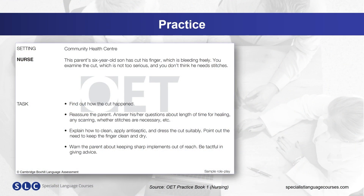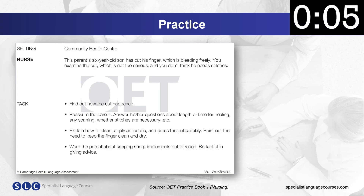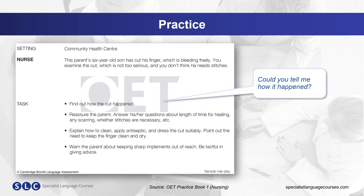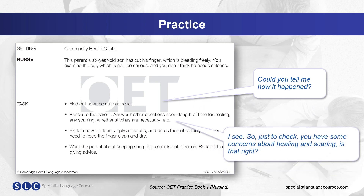Now let's take a look at a sample OET role card and put into practice some of the things we've talked about so far. Look at the first two tasks on the role card. Think about how you could use an open question at the start, and is there an opportunity to summarise information to check in the second point? Here are some examples: 'Could you tell me how it happened?' and 'So just to check, you have some concerns about healing and scarring. Is that right?'